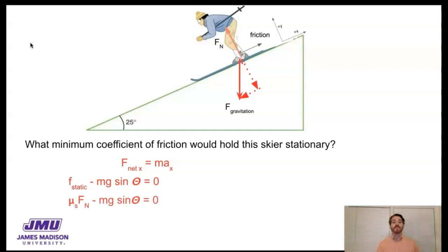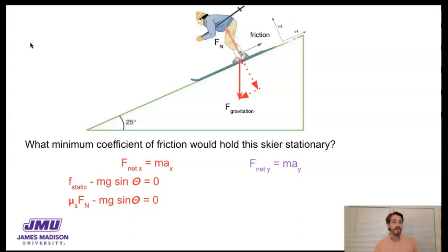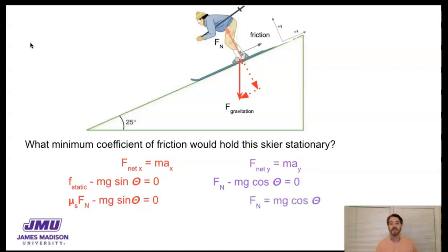I can solve for the coefficient of static friction if I know the normal force, but I don't. So I need to evaluate the y-direction using Newton's second law: net force in the y-direction equals mass times acceleration in the y-direction. The normal force points in positive y, and gravity's y-component points in negative y. So the net force is the normal force minus mg cosine theta. The skier is not accelerating in the y-direction — not off the slope or into it — so the normal force equals mg cosine theta. I can now plug that back into the x-equation.